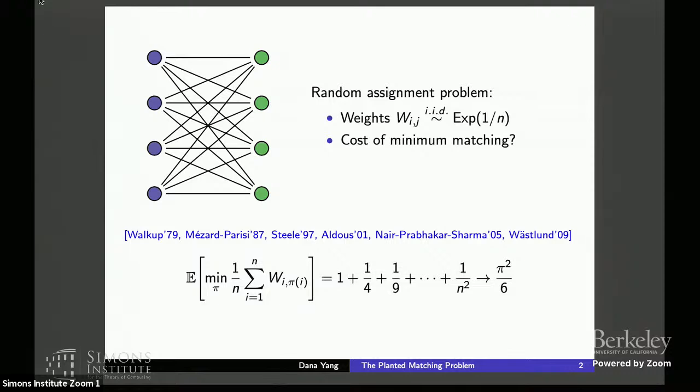And it was also shown later rigorously that for finite N, this expected weight of the minimum weight matching is exactly the partial sum of the 1 over I-squared series.